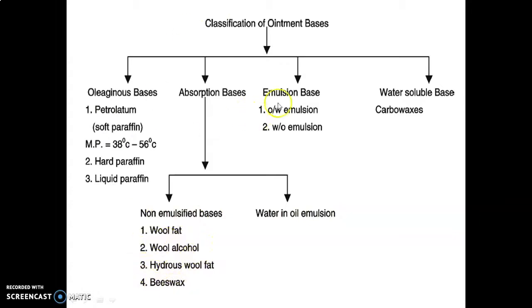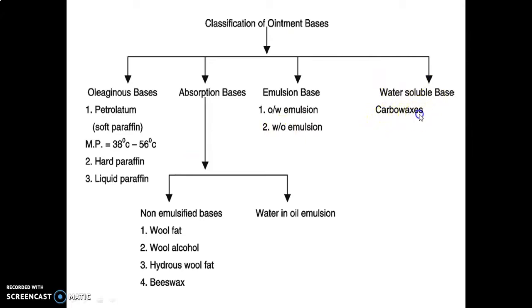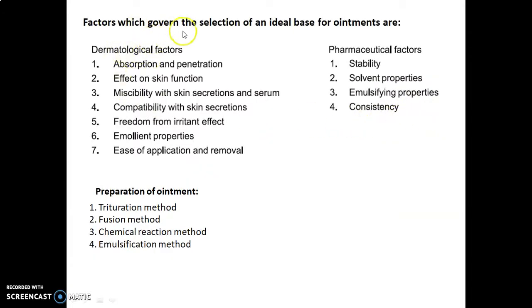Emulsion bases are of two types: oil-in-water (O/W) emulsion, in which oil acts as the internal phase and water as the external phase; and water-in-oil (W/O) emulsion, in which water acts as the internal phase while oil acts as the external phase. Water-soluble bases include carbowaxes.